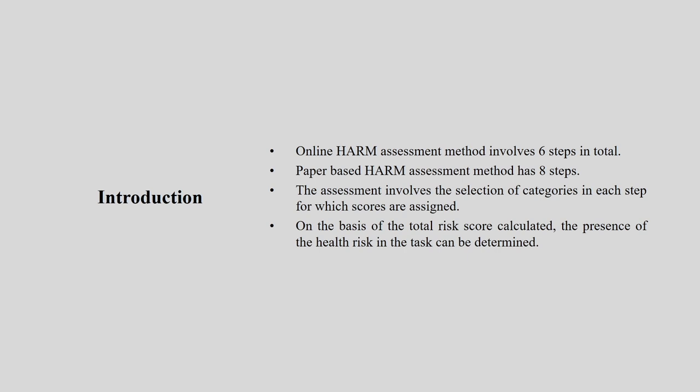The online HARM assessment method involves 6 steps in total. The paper-based version has two modalities: if you are doing it with pen and paper, it has 8 steps. The software handles background calculations online, giving you results within 6 steps. If doing it offline with pen and paper, you have to do two extra steps. The assessment involves the selection of categories in each step for which scores are assigned.